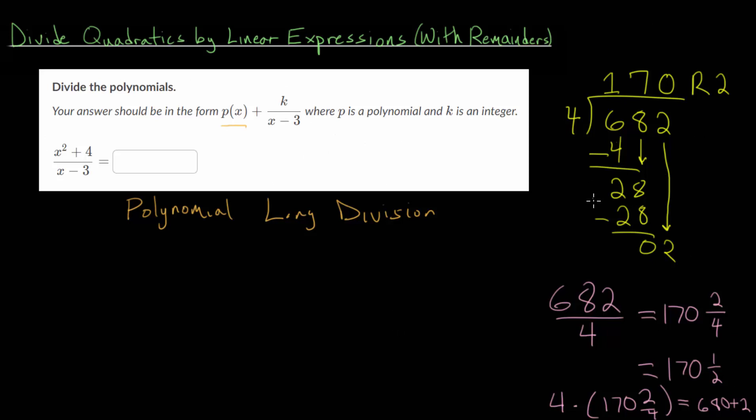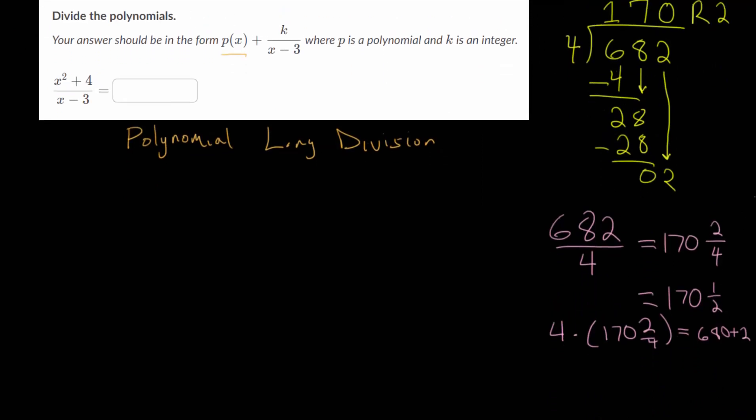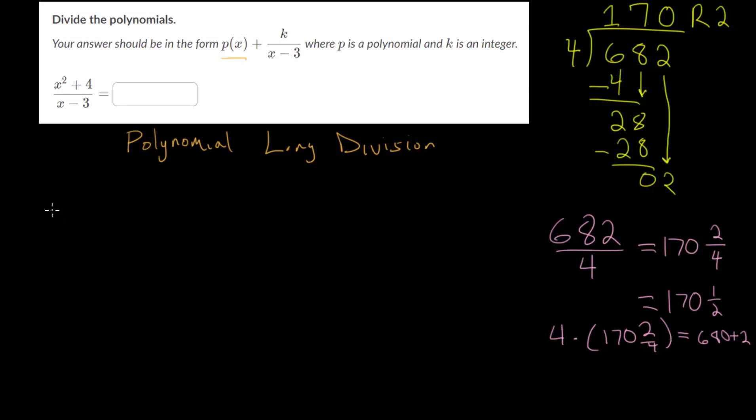Now that we've reminded ourselves how to carry out long division, let's think about how it works with polynomials. It's fairly similar, but with a couple differences. Let's rewrite our expression: x squared plus 4 divided by x minus 3. We have our quadratic up top and linear term below. We'll write this as a long division problem. We put our divisor, x minus 3, on the outside, and our dividend on the inside.